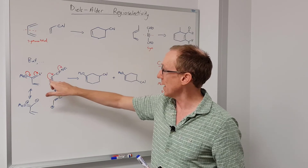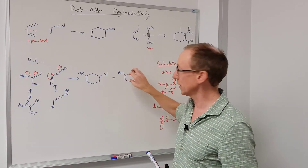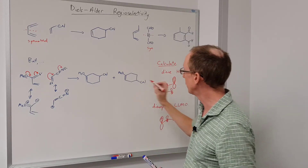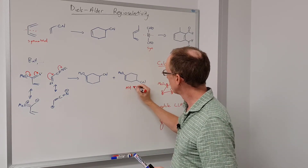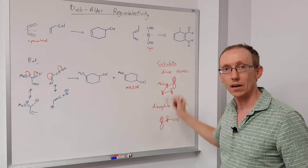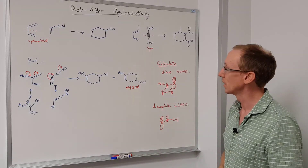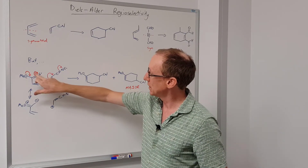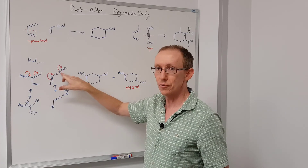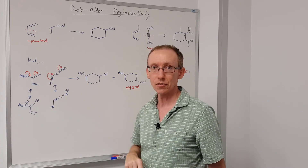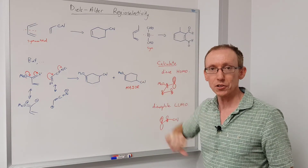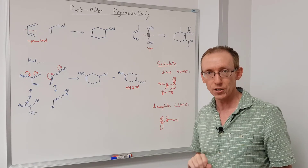This result is the same as what we get when we calculate the HOMO and the LUMO. We can do that for other simply substituted dienes and dienophiles where we have strongly electron-withdrawing groups and strongly electron-donating groups. So that's a brief introduction to Diels-Alder regioselectivity.